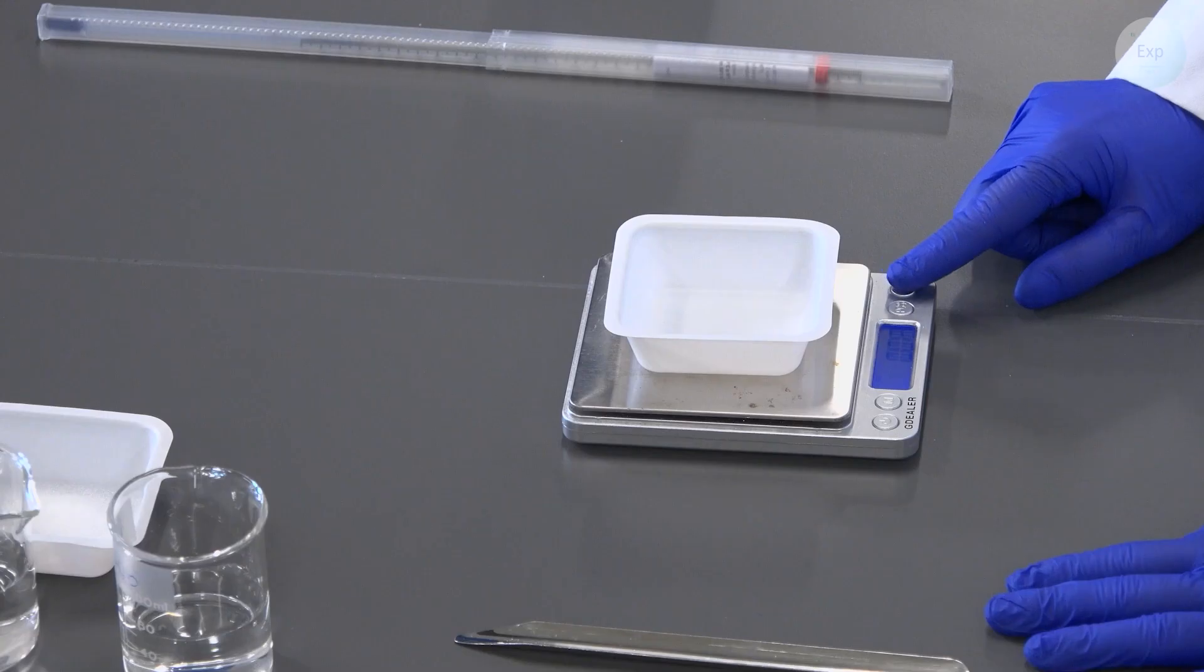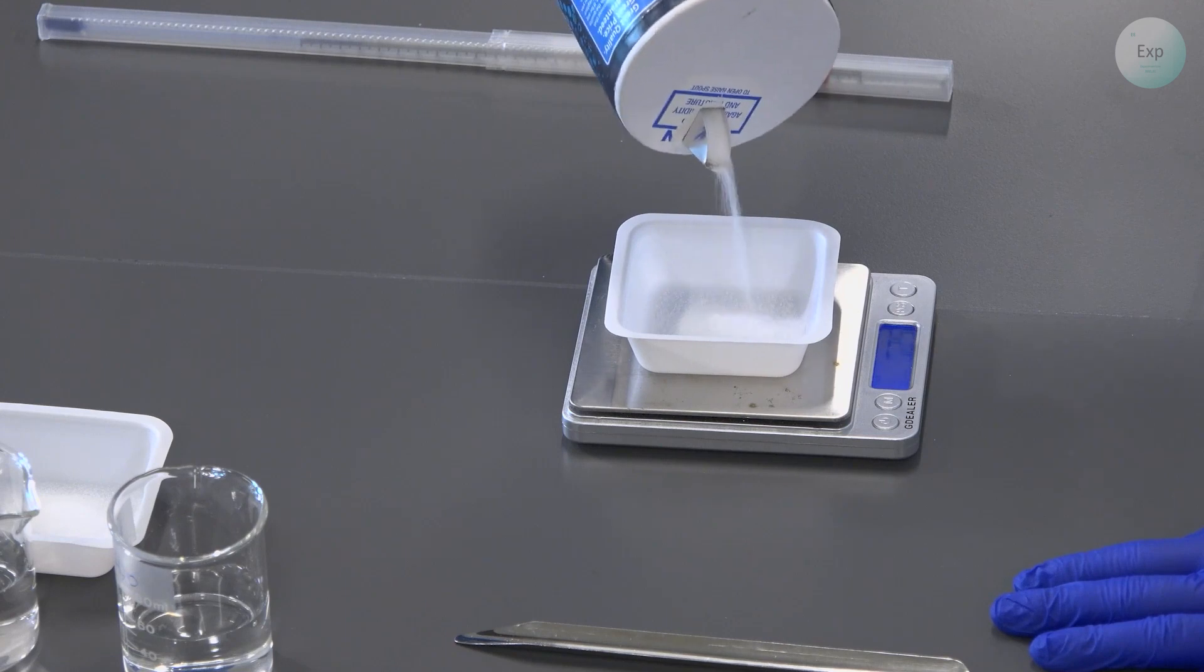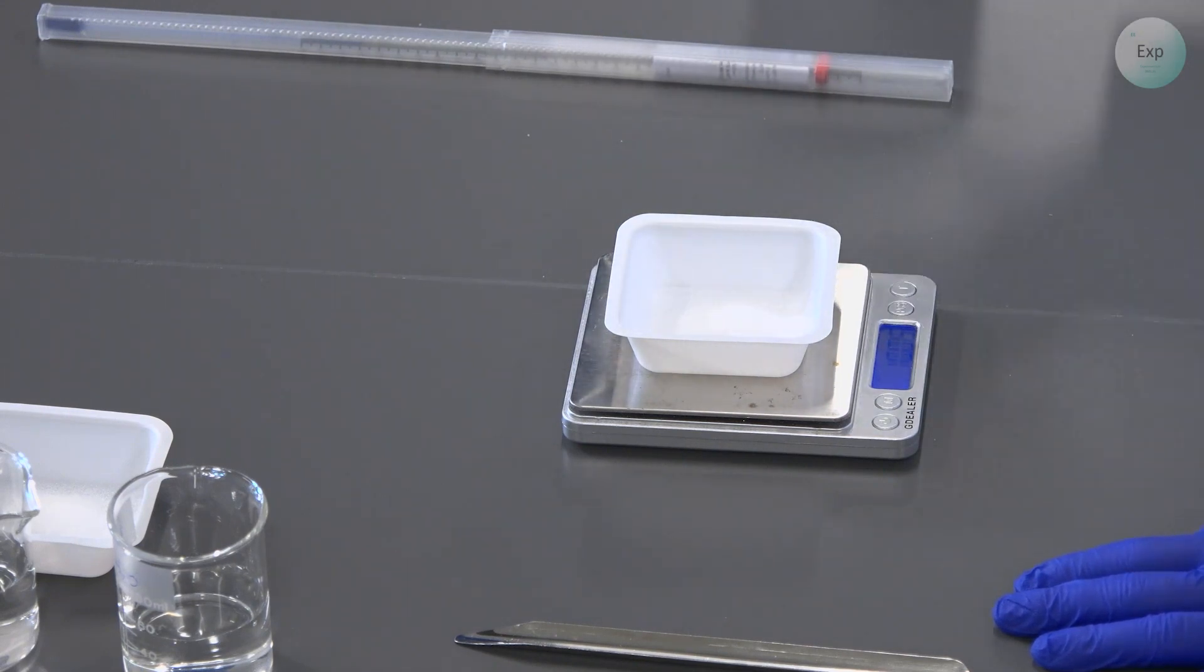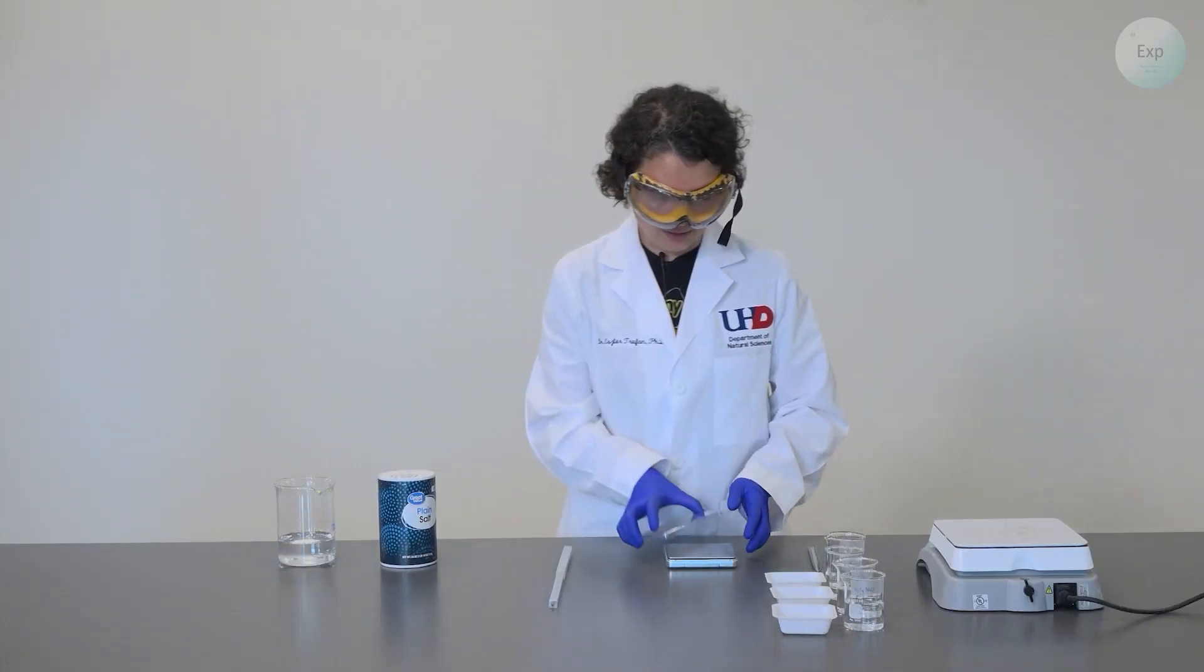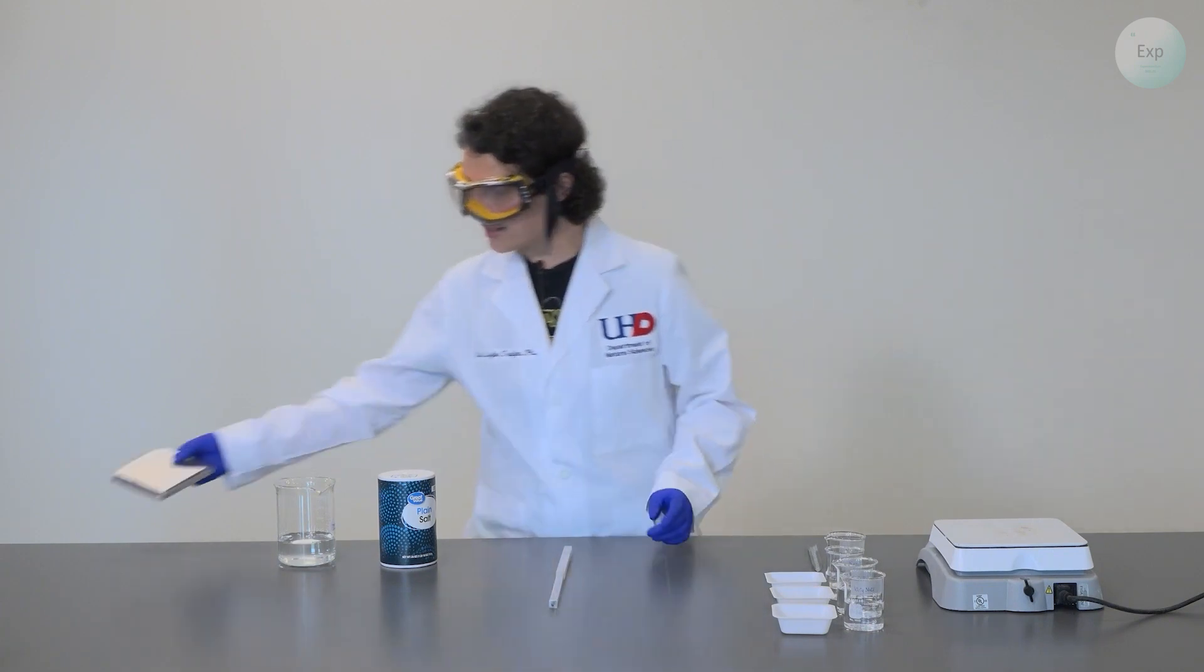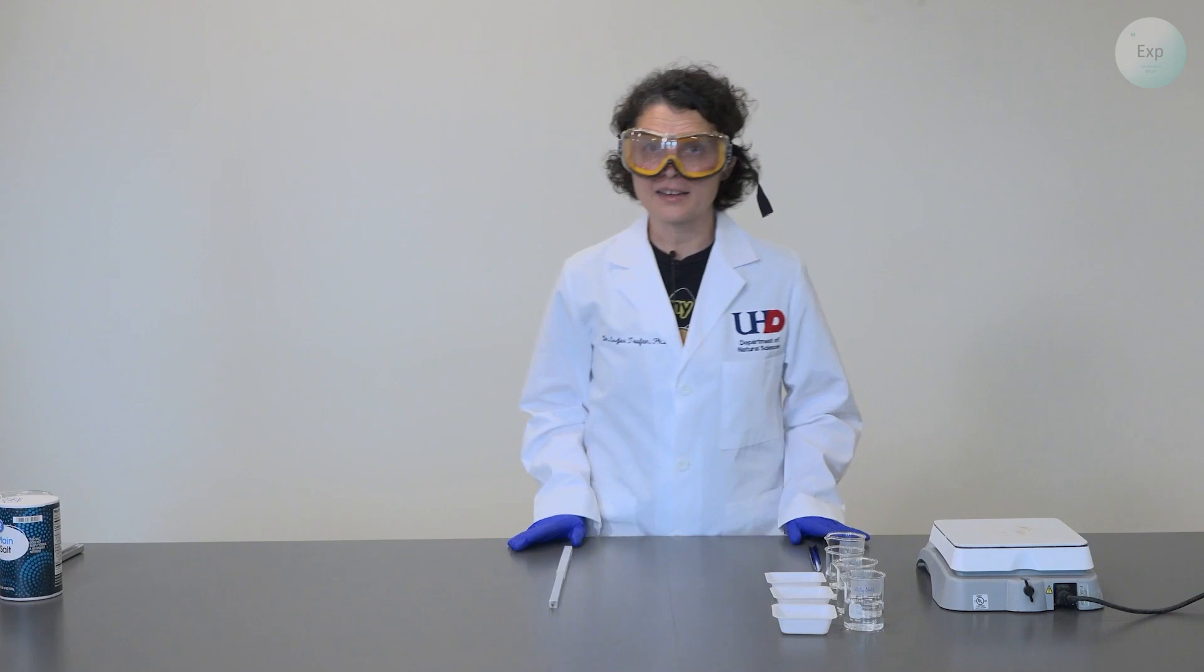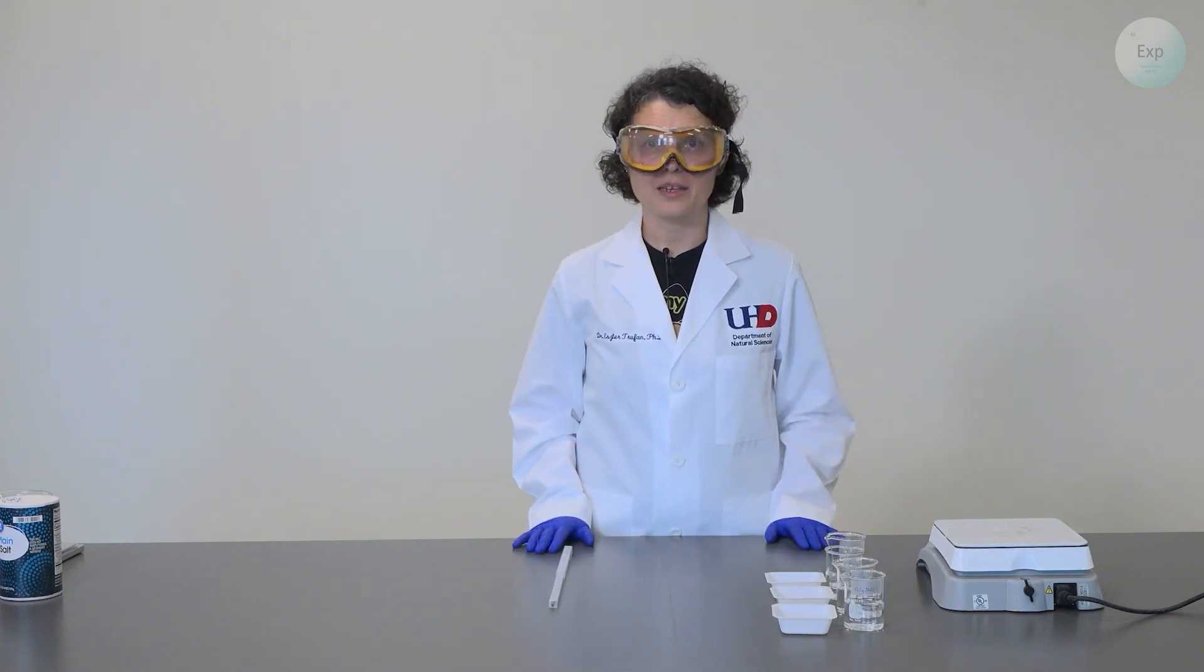And then in my final weighing boat, I will measure out 10 grams of sodium chloride. I measured 10.04 grams. With that, all my mass measurements are complete. I will set my scale to the side. All my chemicals have been selected and measured, so those can go to the side. I can move on to making my solutions.